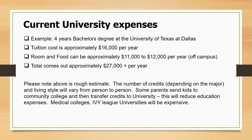This is just a rough estimate — it depends on number of credits, how big the program is, and your kid's lifestyle. Some parents send their kids to community college for two years and then transfer credits to university as a way to save. If your kid wants to become a doctor or go to Ivy League universities, it will be much more expensive. But I'm looking at a typical four-year college degree in a decent university like UT Dallas, UT Austin, or Rice University. These are today's actual numbers.